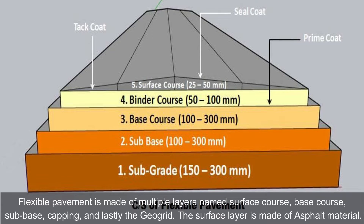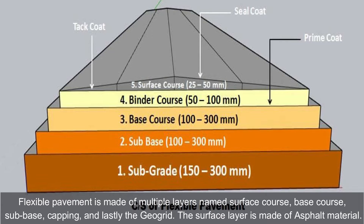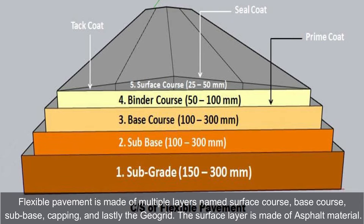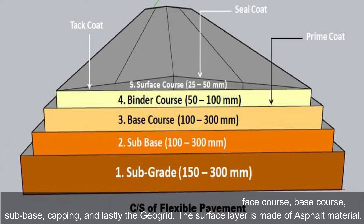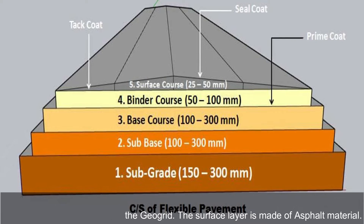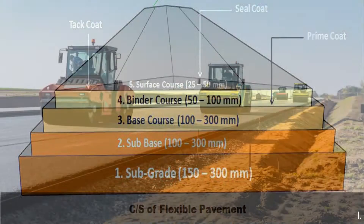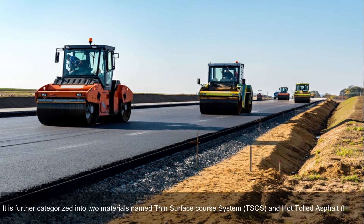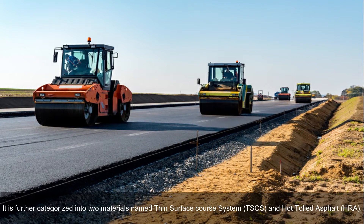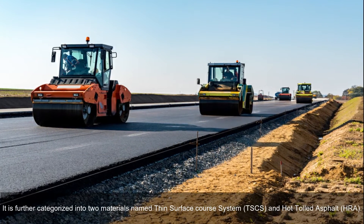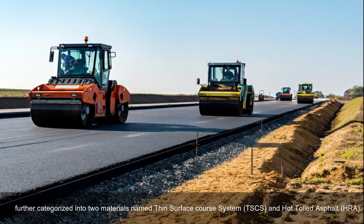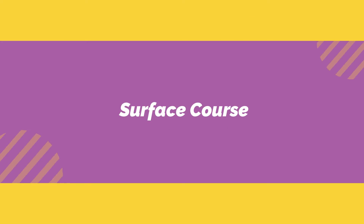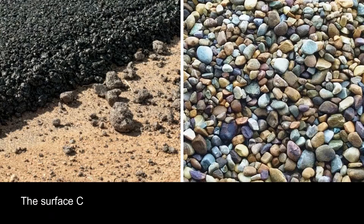Flexible pavement is made of multiple layers named surface course, base course, sub-base, capping, and lastly the geogrid. The surface layer is made of asphalt material and is further categorized into two types: thin surface course system (TSCS) and hot rolled asphalt (HRA) surface course.